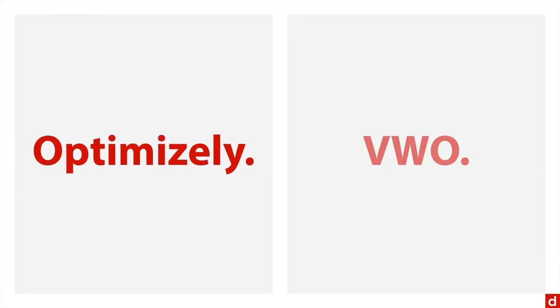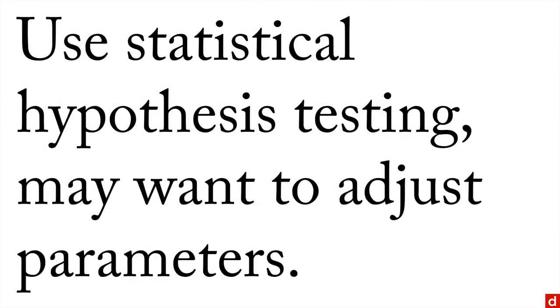If you want some software to do A/B testing, two of the most common choices are Optimizely and VWO, which stands for Visual Web Optimizer. Many others are available, but these are especially common. When you get the data, you're going to use statistical hypothesis testing to compare the differences, or really, the software does it for you automatically. But you may want to adjust the parameters because most software packages cut off testing a little too soon and the information is not quite as reliable as it should be.